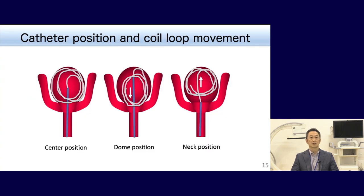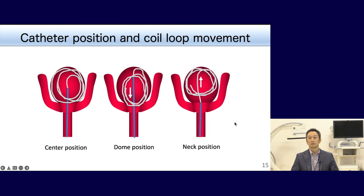Coil loop movement is different according to catheter position. The standard catheter position is the center or proximal one-third of the aneurysm, and at this position coil loops move concentrically. When the catheter tip is at the deeper, dome position, coil loops go to the neck side. On the other hand, when the catheter tip is around the neck, loops go to the dome. So we can control coil loops by catheter maneuver.